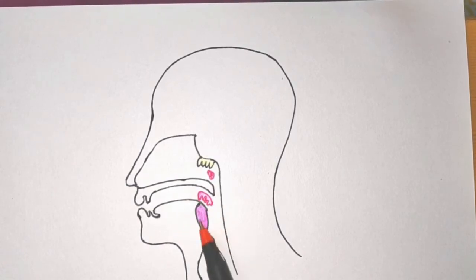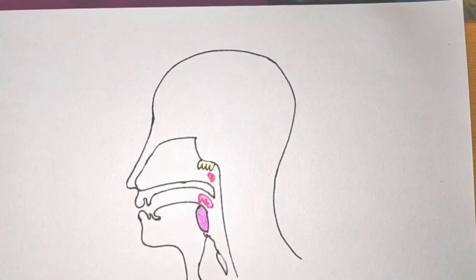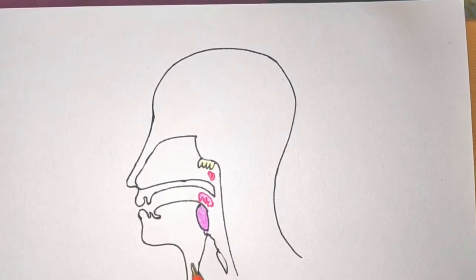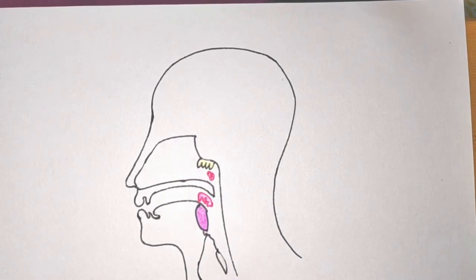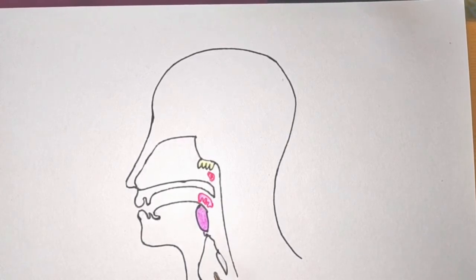Now I will talk about the functions. Waldeyer's ring is responsible for development of body immunity and antibody formation, particularly in the early years of life. The protection of the lower respiratory tract by guarding the entry to air passage and food passage. It monitors the bacteria coming from food and air and warns the body accordingly.